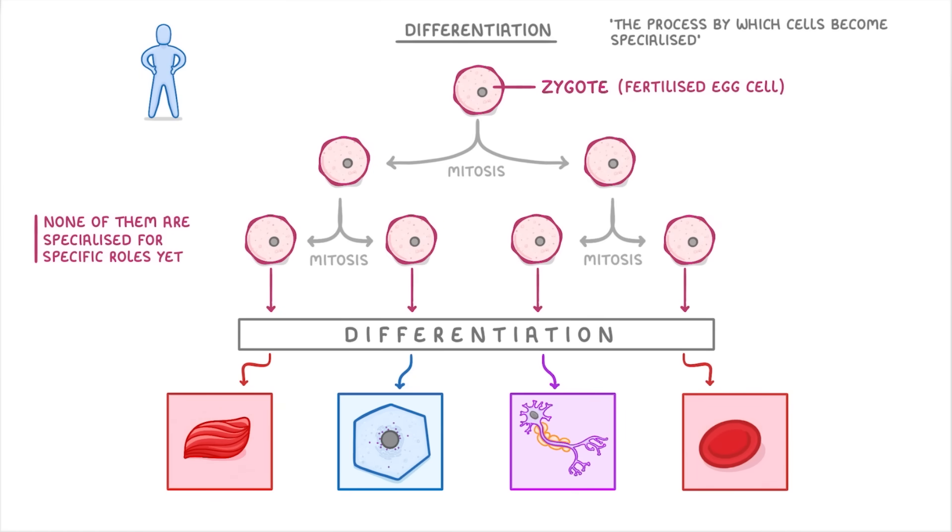If you want a definition, you could say that differentiation is the process by which a cell changes to become specialized. And as we saw earlier, this normally involves changing the shape and structure of the cell, as well as the combination of organelles that it contains.